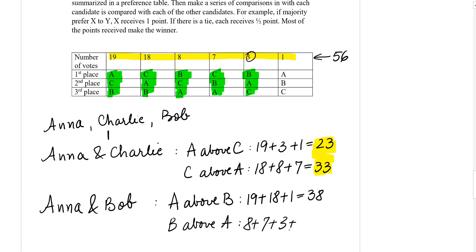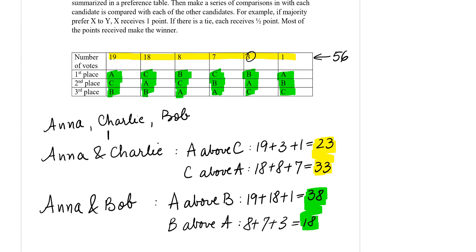Now for Bob above Anna: checking the columns, Bob is not above Anna in the remaining columns, so that's all. Bob's total is less than Anna's 38 points. Comparing these two, Anna wins, so Anna gets one point.